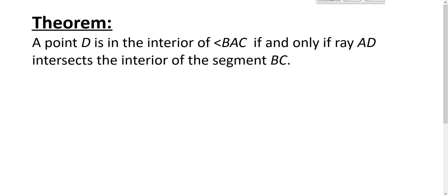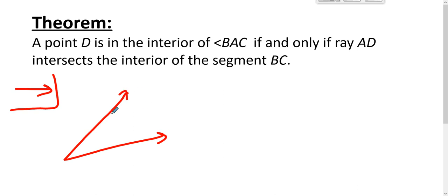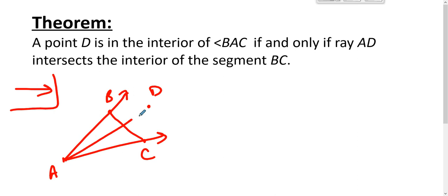This theorem also holds: a point D is in the interior of angle BAC if and only if ray AD intersects the interior of segment BC. Let's go this direction first. We assume that point D is in the interior of angle BAC, and we want ray AD and segment BC to intersect in the interior. That follows from the Crossbar theorem applied to triangle BAC, which tells us that ray AD must intersect segment BC.